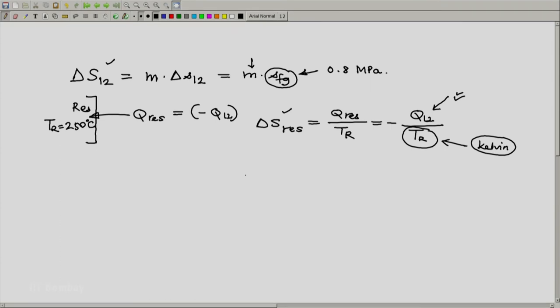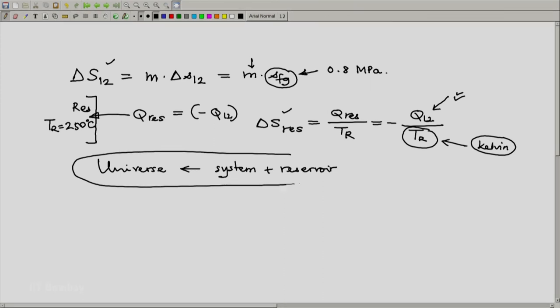And finally, if we assume that the thermodynamic universe is made up of system plus reservoir. Assuming that thermally the system does not interact with any other system except the reservoir. And the reservoir also interacts only with our system and with nothing else. Then this assumption is right. And then delta S of the thermodynamic universe will be delta S of the system, delta S12 plus delta S of the reservoir.